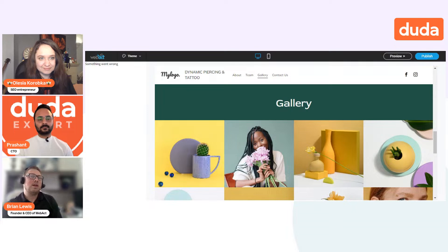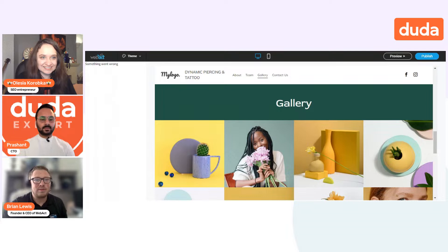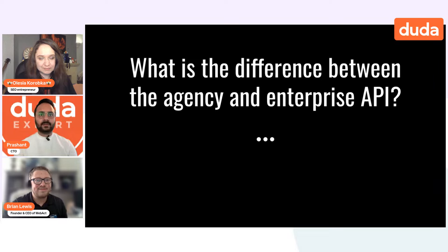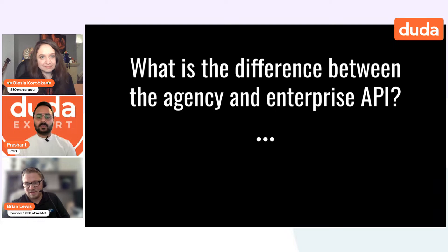That was the preview of both editors. Now I'll pass it off to Prashant to go over more of the advanced information. Let me pull up my slide here. The first thing you might want to know is: who is this API available to and what are the differences? Right now Duda offers API plans to enterprise or agencies with customized payment plans.